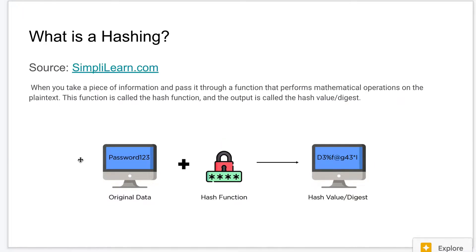So what is hashing and one-way hashes? It's basically when you take a piece of information — that could be anything like a password or a large document — and you pass it through a function that performs mathematical operations on that plain text. The function then outputs a hash value, sometimes referred to as a message digest. The hash value looks like a bunch of characters with no relationship to each other. The one defining characteristic of the one-way hash is that the mathematical equation that produces it is not reversible — no algorithm exists to reverse it. That's why it's called one-way, and that's what makes it very secure.